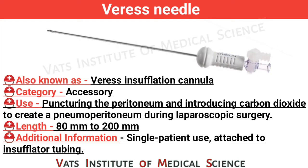Veress cannula, also known as insufflation cannula. Category: accessory. Use: puncturing the peritoneum and introducing carbon dioxide to create pneumoperitoneum during laparoscopic surgery. Length: 80 mm to 200 mm. Additional information: single patient use, attached to insufflator tubing.